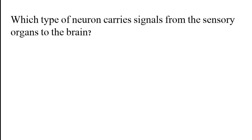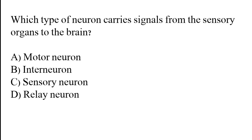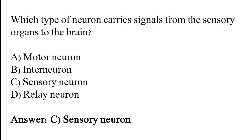Which type of neuron carries signals from the sensory organs to the brain? Options: Motor neuron, Interneuron, Sensory neuron, Relay neuron. The correct answer is option C. Sensory neuron is the type of neuron which carries signals from the sensory organs to the brain.